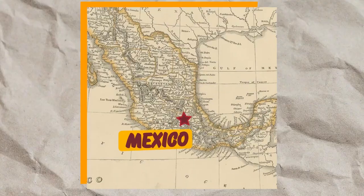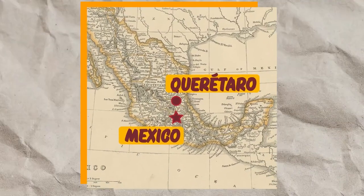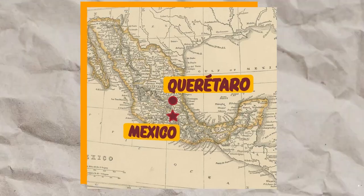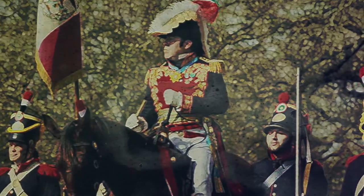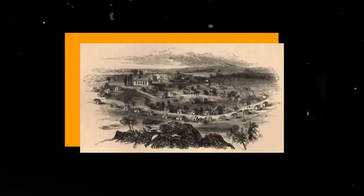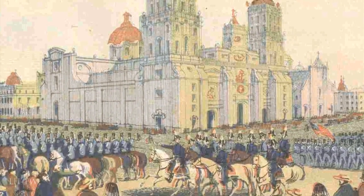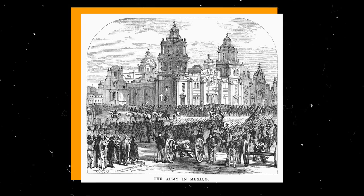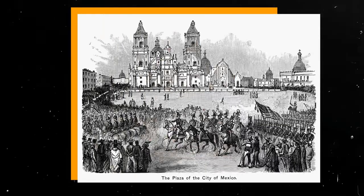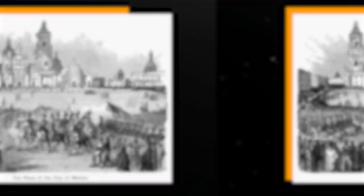The Mexican government relocated its headquarters to Queretaro, approximately 135 miles away. On September 16, 1847, General Antonio Lopez de Santa Ana announced his resignation and left the country for exile in Kingston, Jamaica. The United States Army transitioned from an invasion force to an army of occupation, with U.S. troops remaining in Mexico City from September 14, 1847, to June 12, 1848.